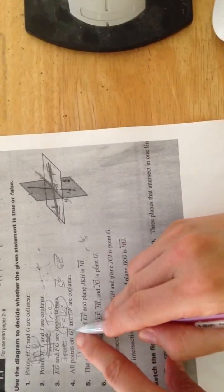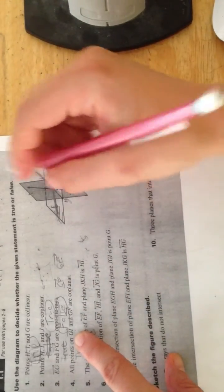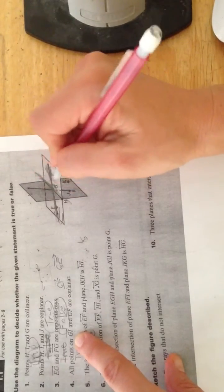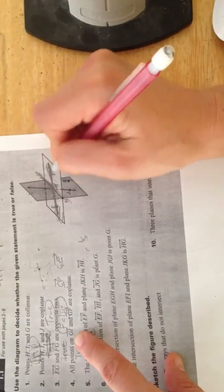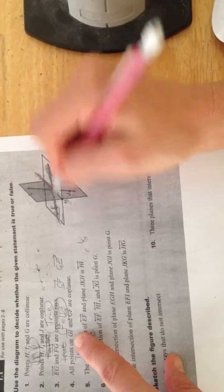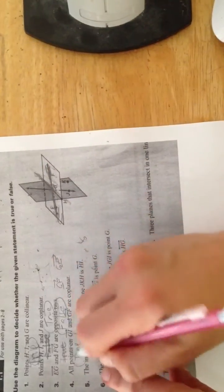For this guy, they have GI and GF are coplanar. GI and GF, yep, they're both on this plane here, so that is true, that's good.